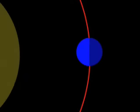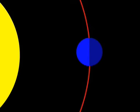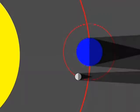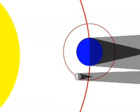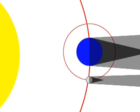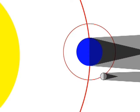As the Earth orbits around the sun, the sun shines on it and on the moon. But the Earth casts its shadow, just like you do when you stand outside on a sunny day. So a lunar eclipse is what we see when the full moon moves into the Earth's shadow.